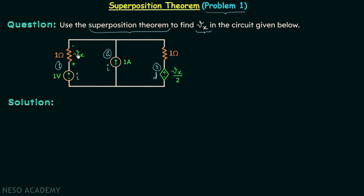To find Vx, we will first find the voltage across this resistor due to the first source, with the second source turned off. Then we will find the voltage across this resistor due to the second source, with the first source turned off. Finally, we will add the two obtained voltages to get Vx. Step one: finding the voltage due to the 1 volt source alone.